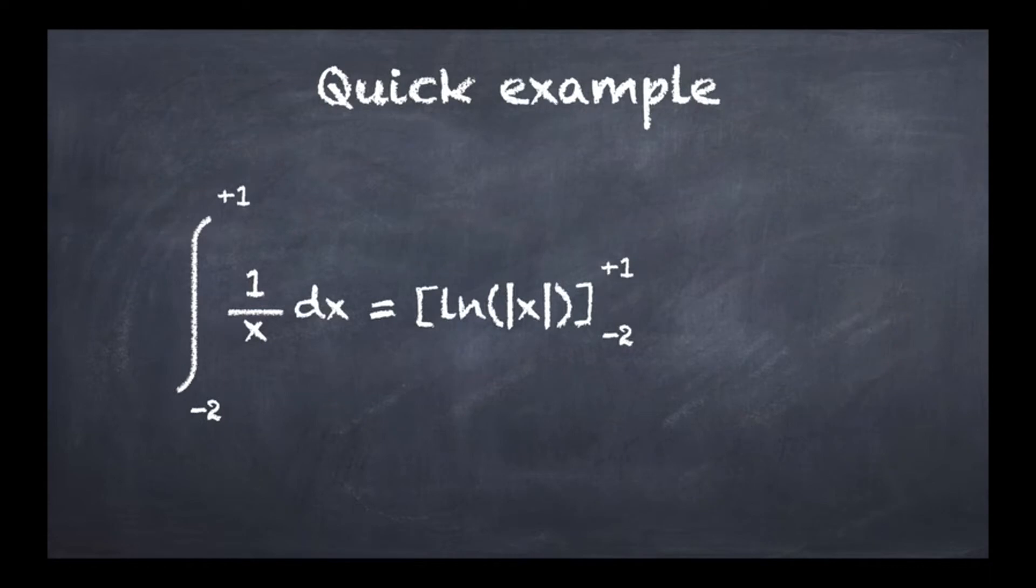They are going to put it in square brackets like this, and then this is going to be equal to the log of 1 minus the log of the absolute value of minus 2, which as a result is going to give minus log of 2.